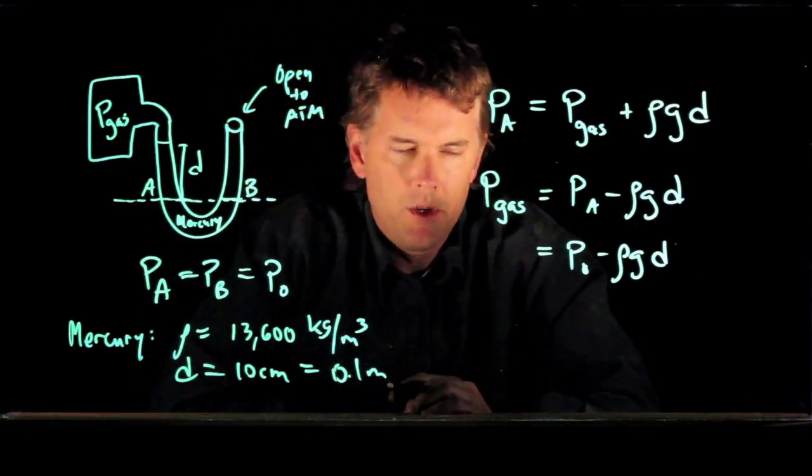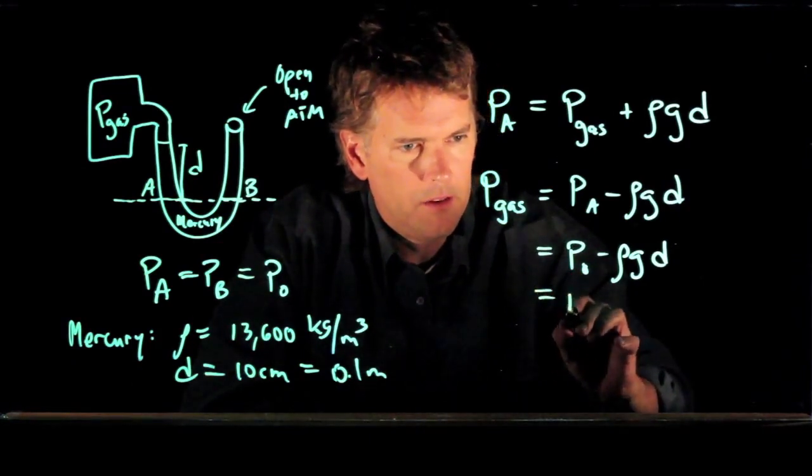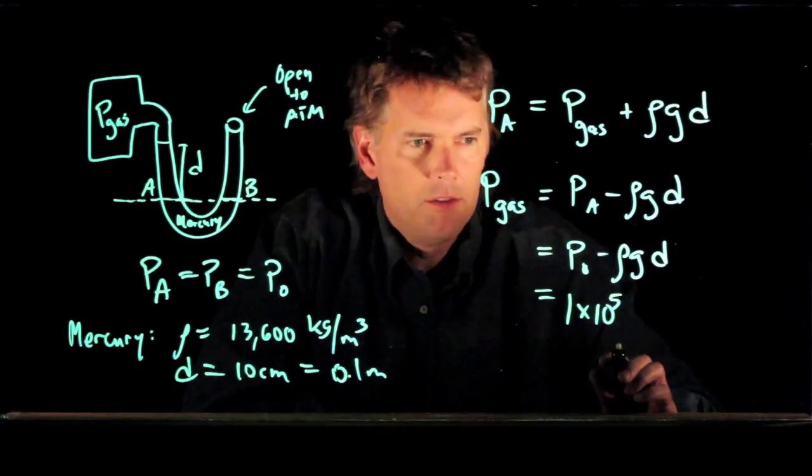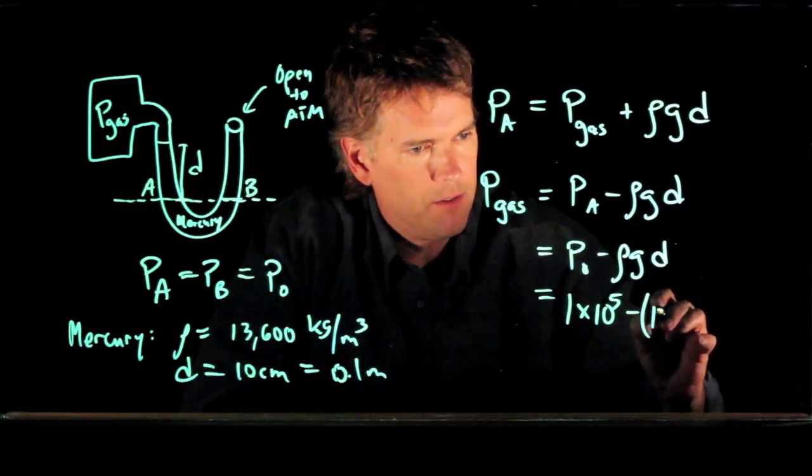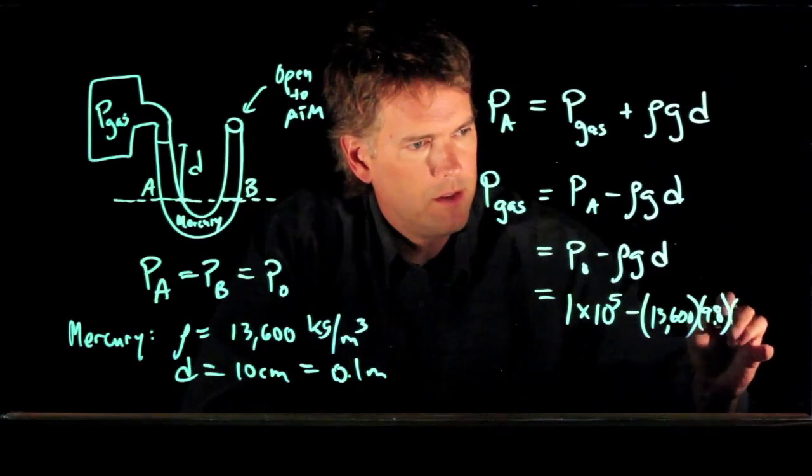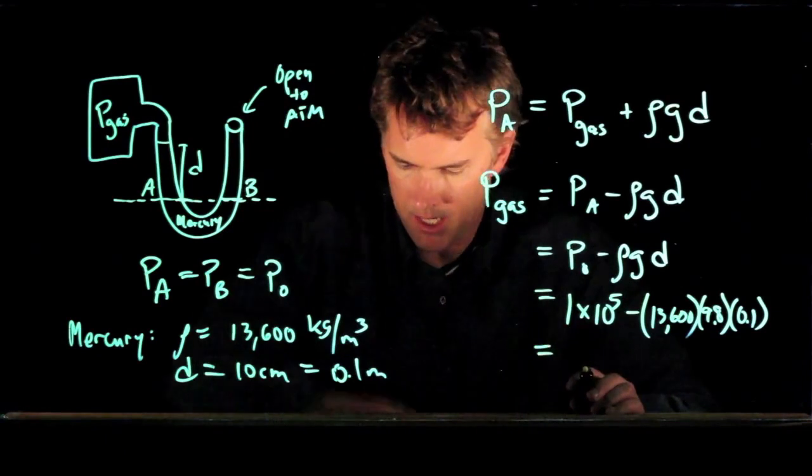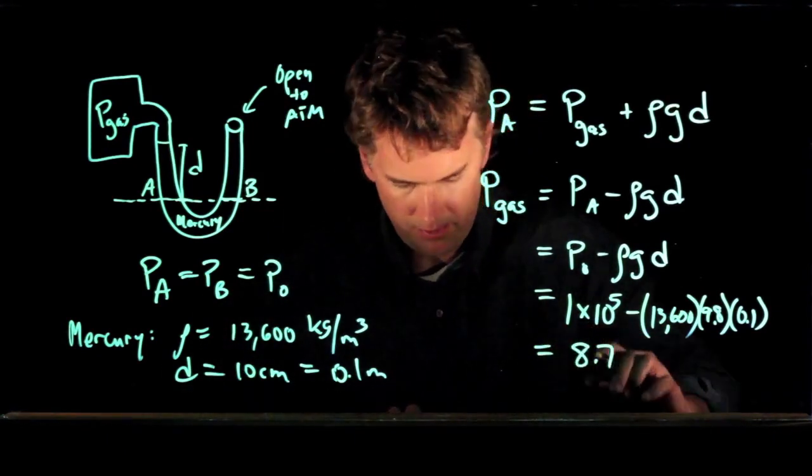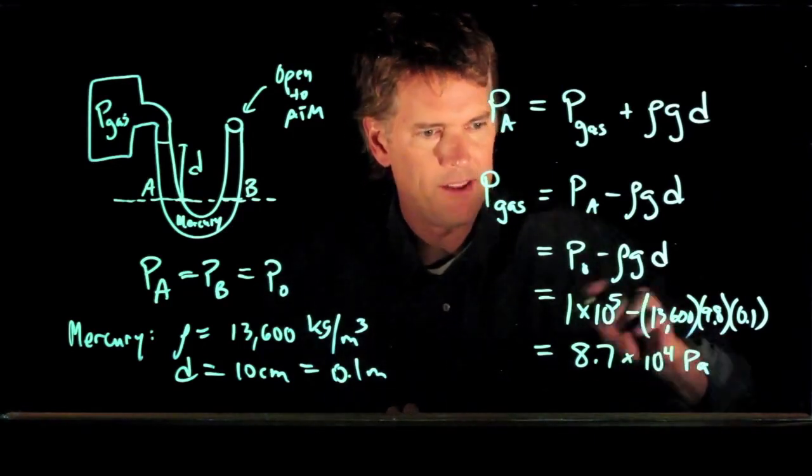And now we should have everything that we need to plug into this equation. P nought is 1 atmosphere. 1 atmosphere is 1 times 10 to the 5 pascals. Rho, we just said, was 13,600. G is, of course, 9.8. D is 0.1. And now you can plug in all these numbers. And in SI units, you should get around 8.7 times 10 to the 4 pascals.